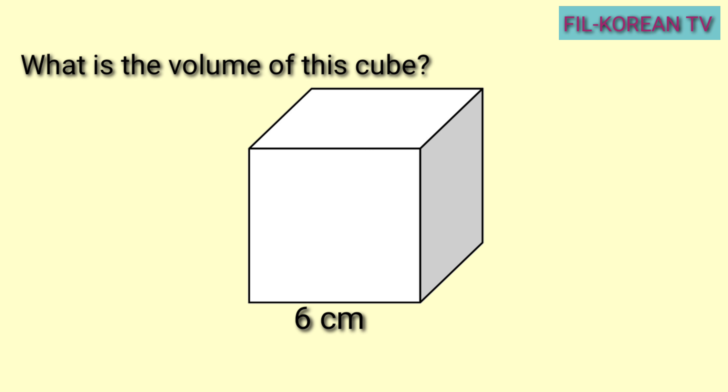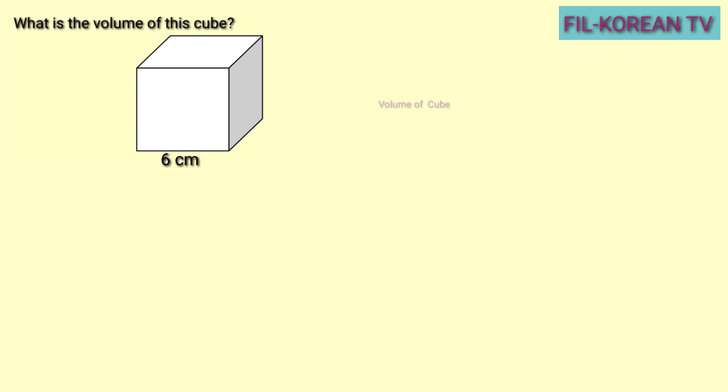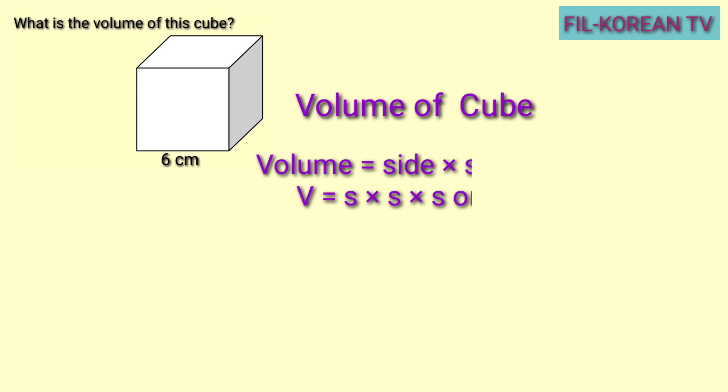Next, what is the volume of this cube? Dito naman, kukunin natin ang volume ng cube na ito na merong 6 centimeters na side. Alam naman natin na ang cube ay pare-pareho ang sukat ng lahat ng side. Ang formula sa pagkuha ng volume ng cube ay volume equals side times side times side, or volume equals side cubed.